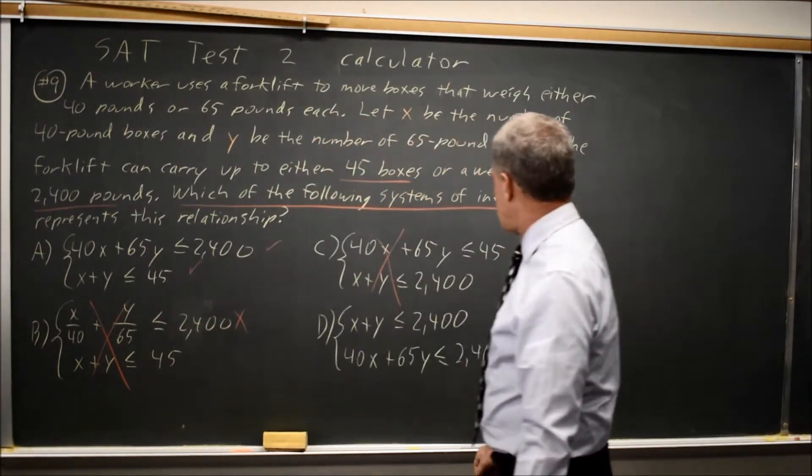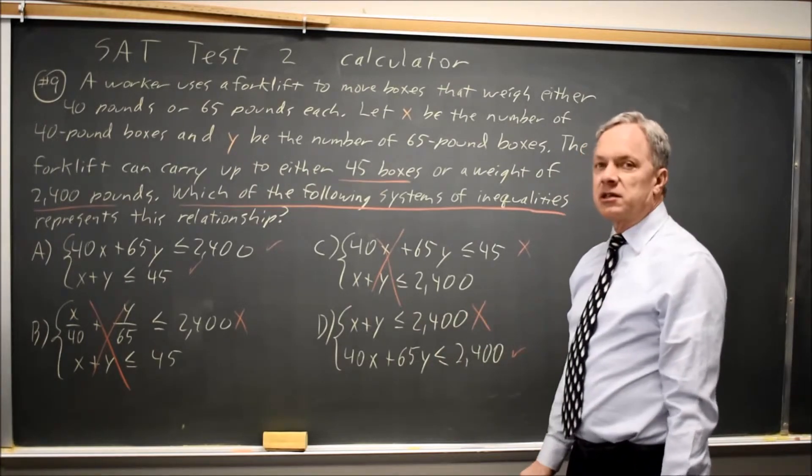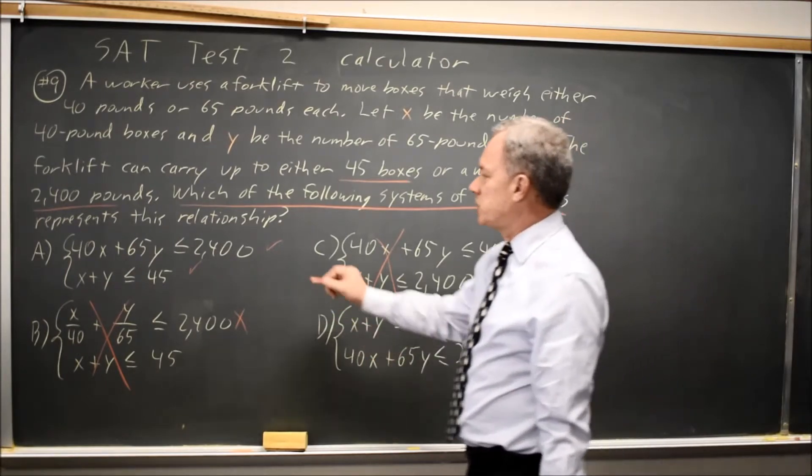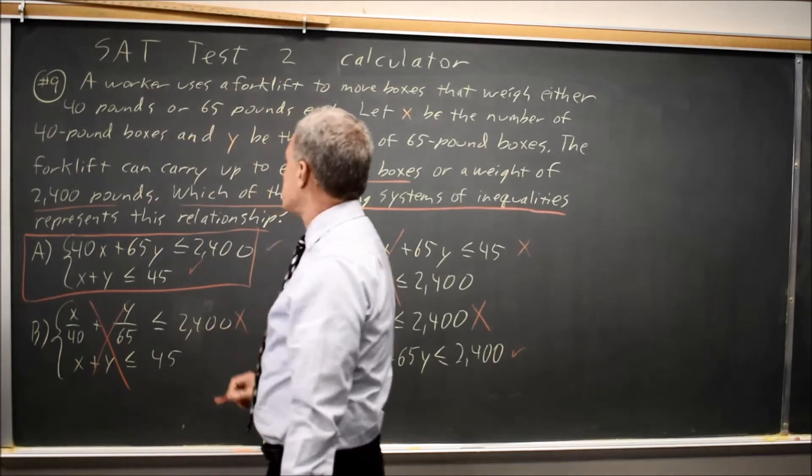Choice A works. Again, X plus Y less than 2400—that is not correct. That would say we can carry up to 2400 boxes, which is not what the words of the question said. So choice A would be our correct answer.